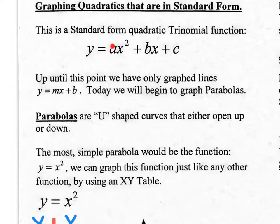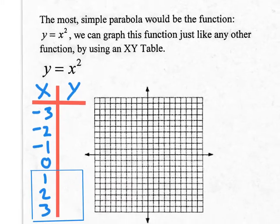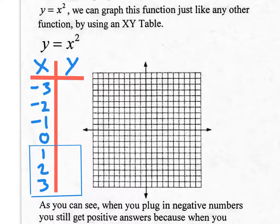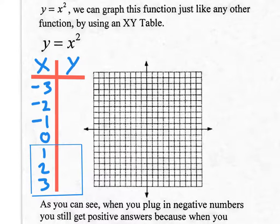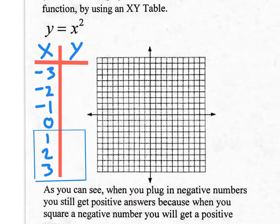When you have numbers in a, b, and c, what you end up with is a U-shaped curve called a parabola. The most simple parabola would be the function y equals x squared. We've already graphed y equals x squared before, so let's graph it one more time.